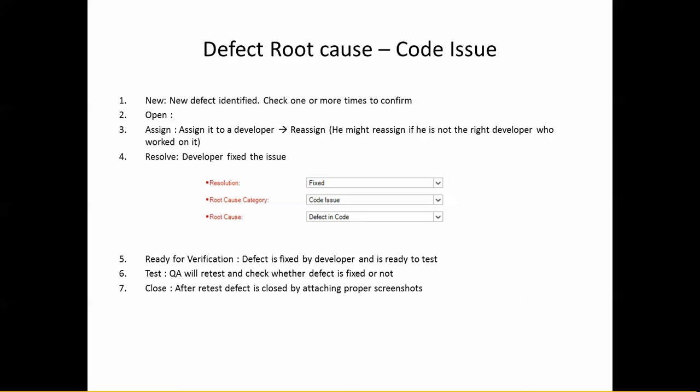Now let's talk about root cause. Root cause analysis is done by the developer — our job is to open defects whenever we find a difference between expected and actual behavior, and assign them to a developer. But as software testers in the industry, we should know every term related to the defect life cycle, including what the developer does. I've highlighted three or four major root causes we encounter in day-to-day life.